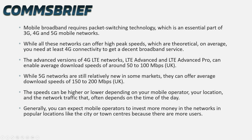While all these networks can offer high peak speeds which are theoretical, on average you need at least 4G connectivity to get a decent broadband speed. The advanced versions of 4G LTE networks — LTE Advanced and LTE Advanced Pro — can enable average download speeds of around 50 to 100 Mbps in the UK, while 5G networks can offer average download speeds of around 150 to 200 Mbps. Speeds can be higher or lower depending on your mobile operator, your location, and network traffic. Generally, mobile operators invest more in networks in popular locations like city or town centers.